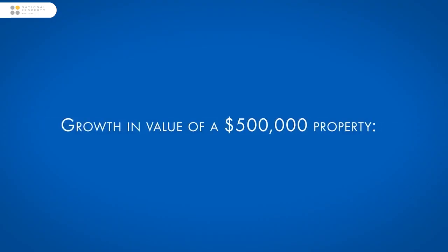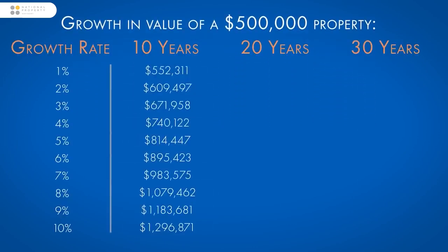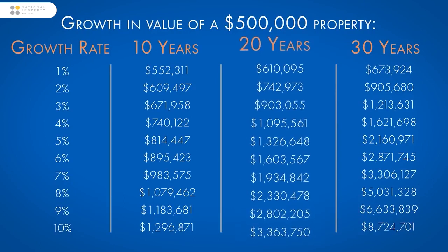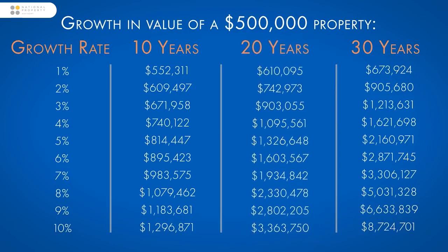Before we get into what drives growth, it's important to see what effect capital growth has on your overall investment returns. The following table shows the effect of a range of compound growth rates on a $500,000 investment over 10, 20 and 30 years. For the sake of this exercise I'll focus on the 20-year column. Depending on your age and personal circumstances, I'd consider 20 years a good buy-and-hold time frame for investment property.